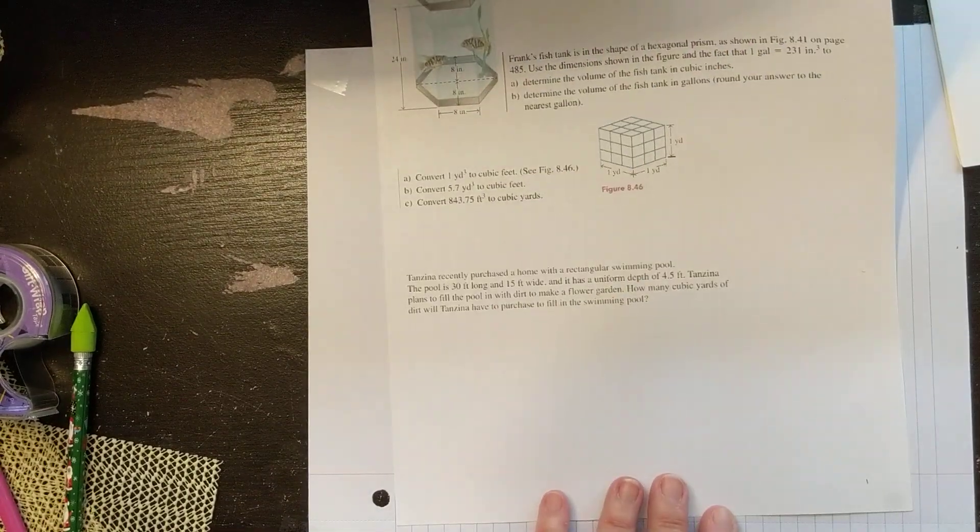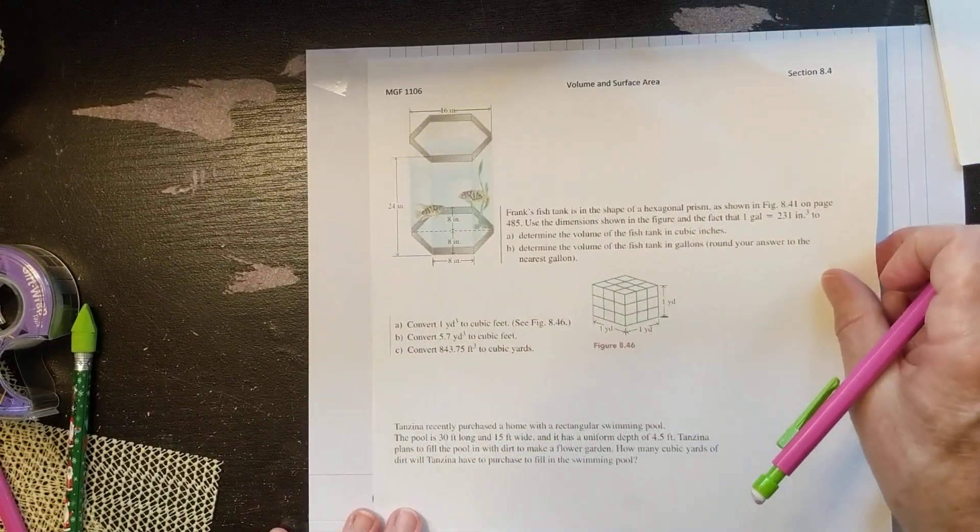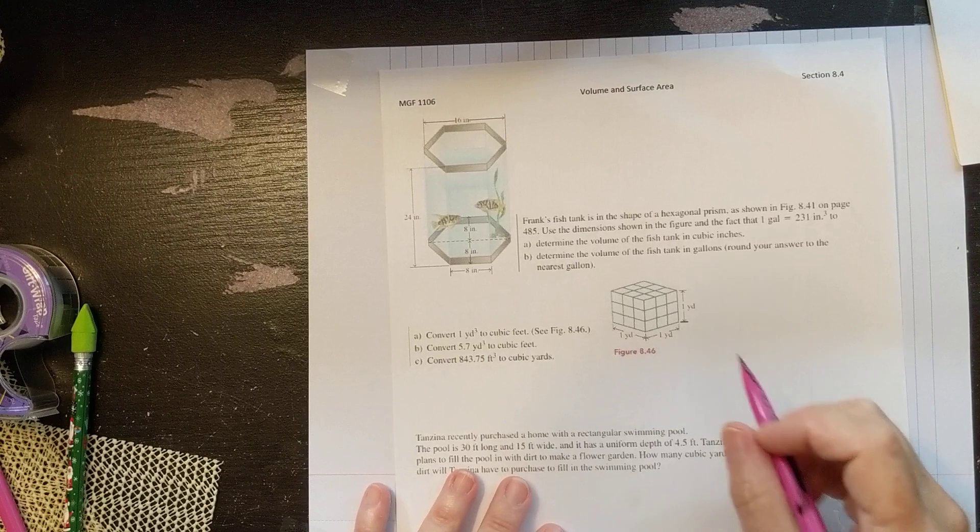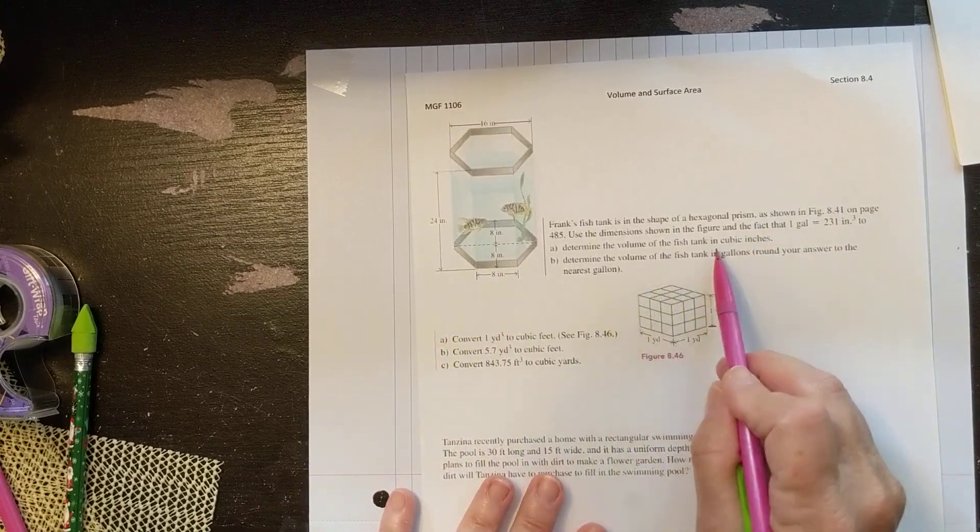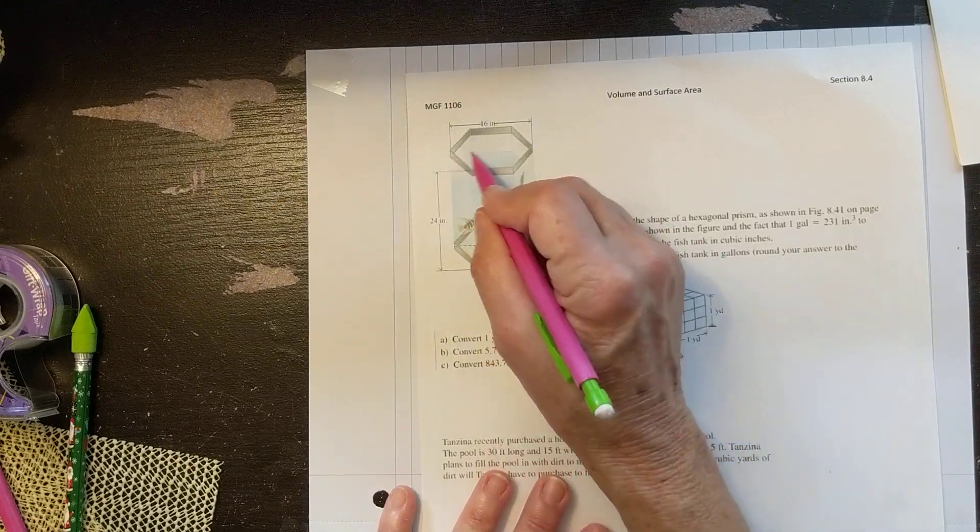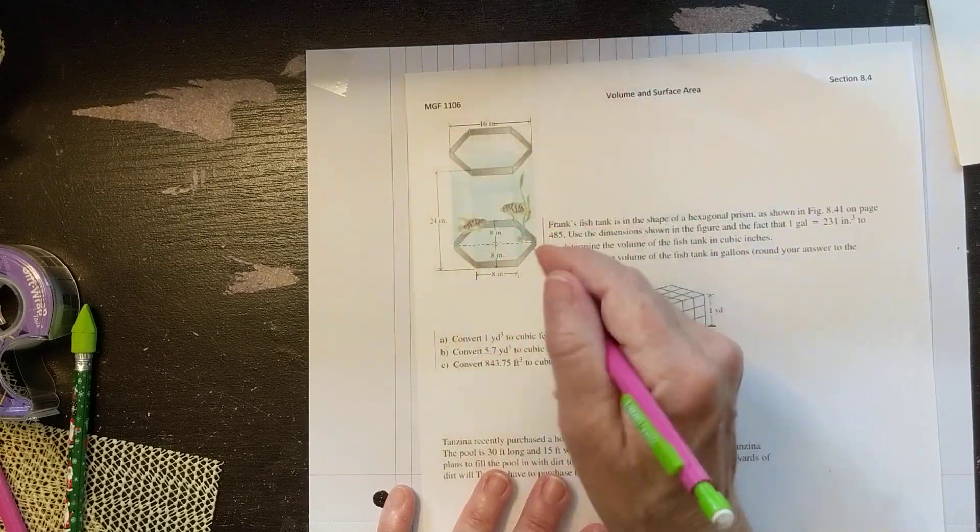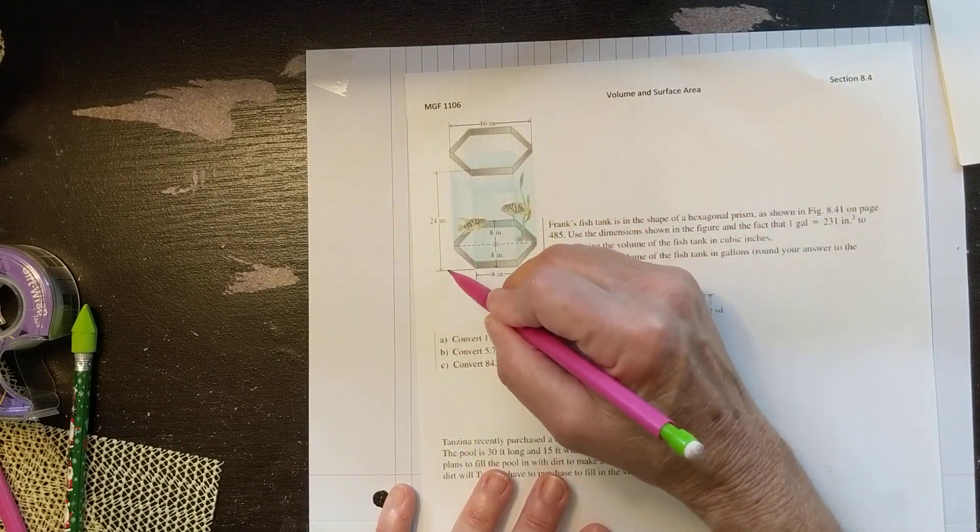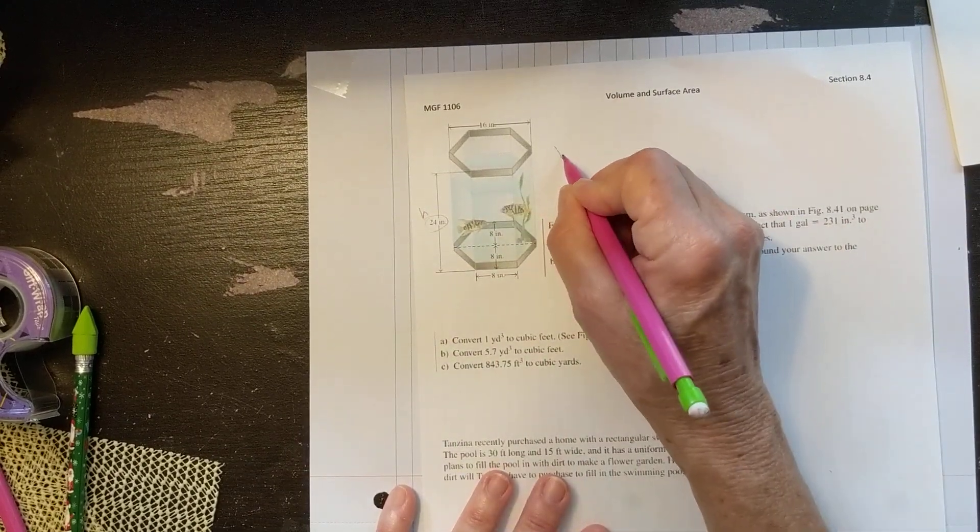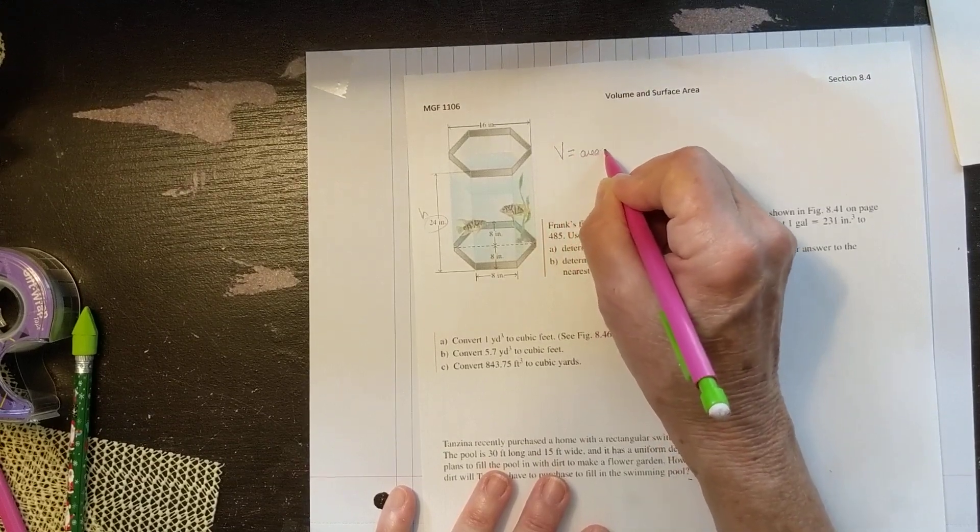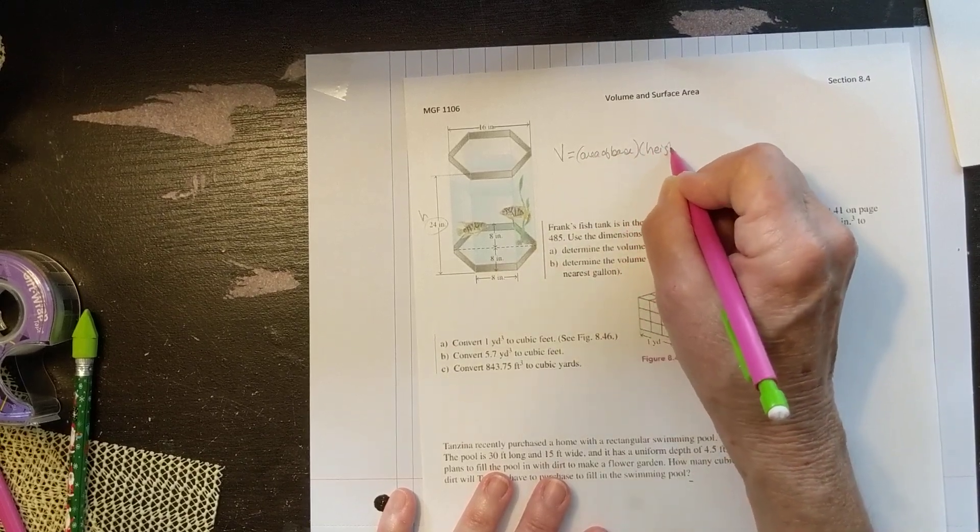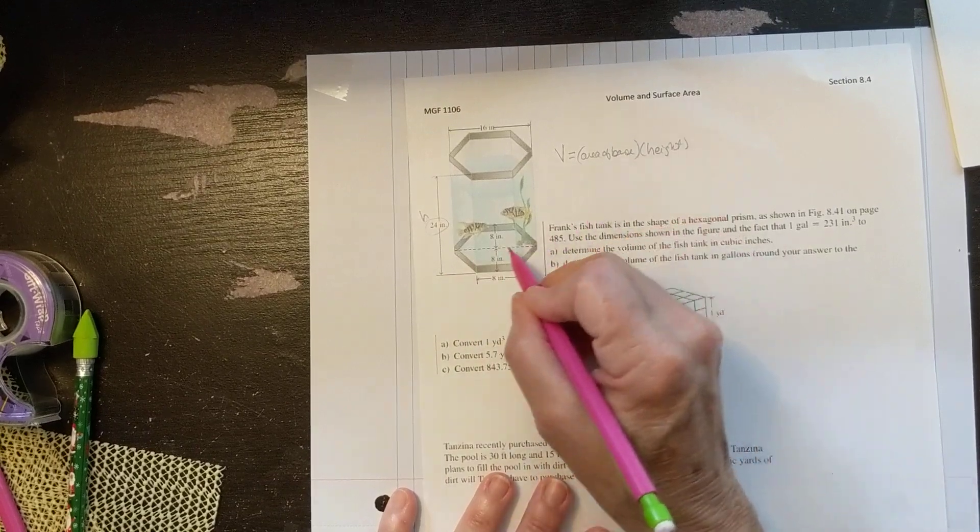Frank's fish tank is in the shape of a hexagonal prism. So we're going to use the dimensions that they gave us to figure out the volume of the fish tank in cubic inches. First let's look at what they gave us. We have this. This is a prism. It's a hexagon extended. So this is the height. From the base to the height of the tank is 24 inches. We just saw that the volume of a prism is equal to the area of the base times the height. The base is this hexagon.